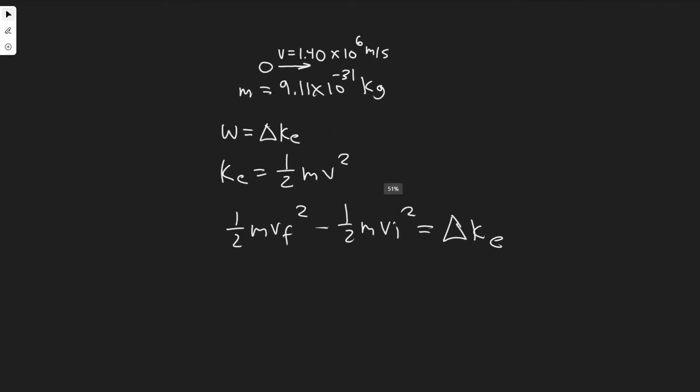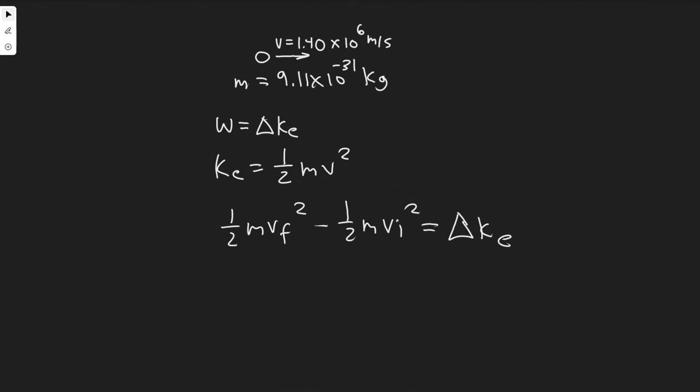So what is the final and initial velocity? Initially, it's traveling at this speed, right? And then at the end, it's going to be stopped because we're trying to find out how much it takes to stop it. So the final velocity is actually zero. So if this value is actually zero, this whole term goes to zero.